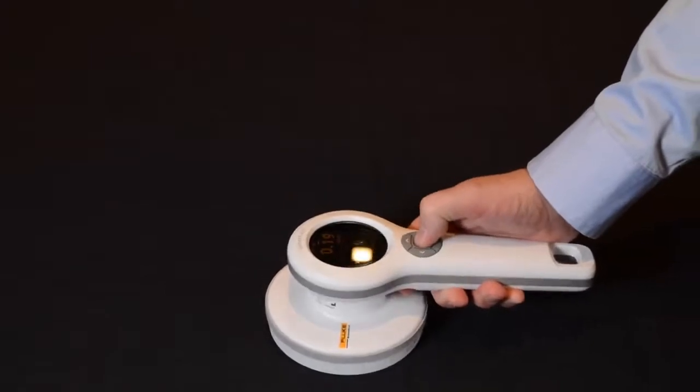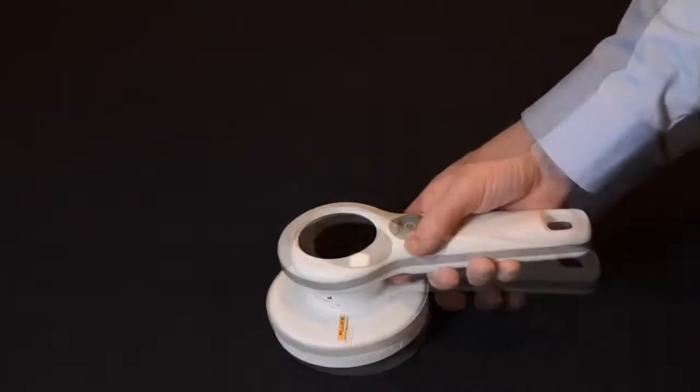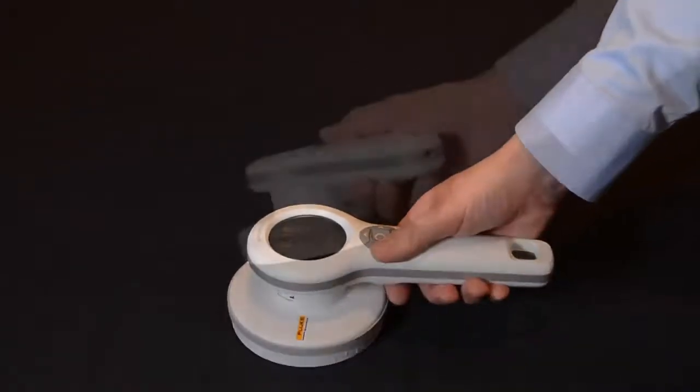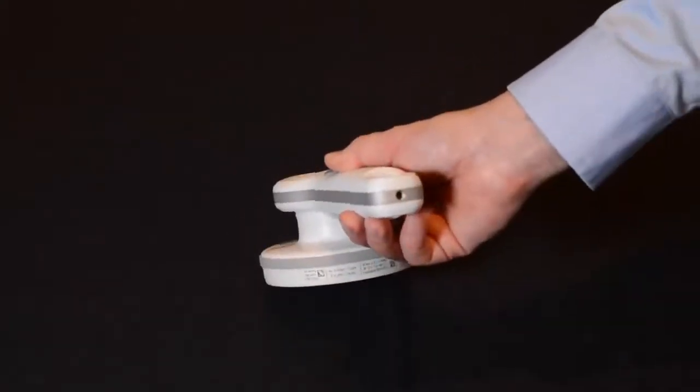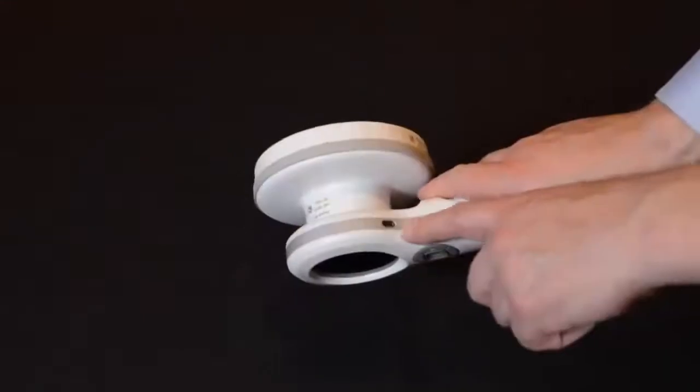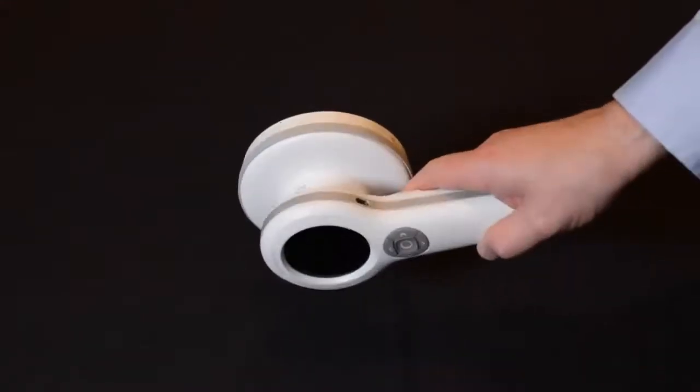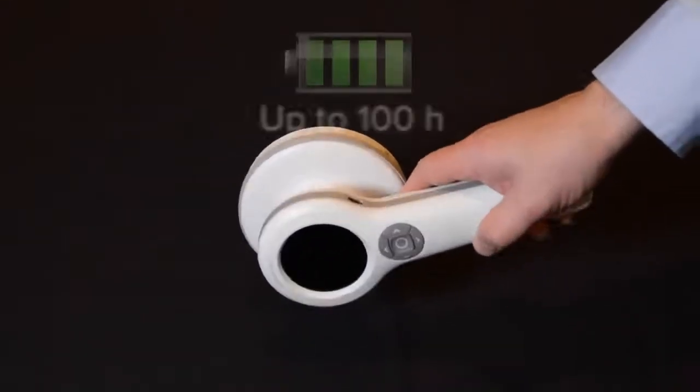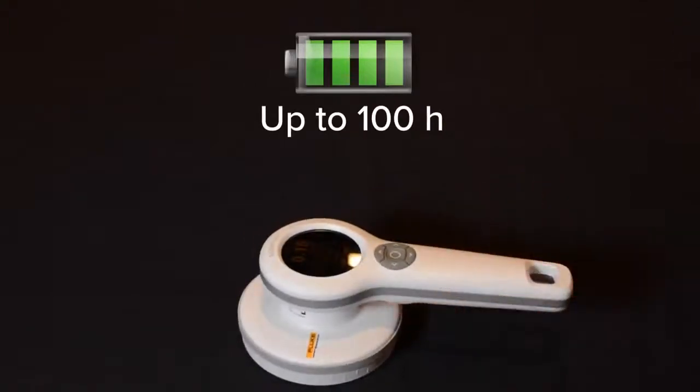The buttons are within easy reach of your thumb when holding the device. You can add a shoulder, arm, or wrist strap for easy carrying. There is threading at the end of the device, so you can place the meter on a camera tripod. Charging is done with a micro USB port. You can use any micro USB charger, or you can use the one included with the product, which will charge it a little bit faster.